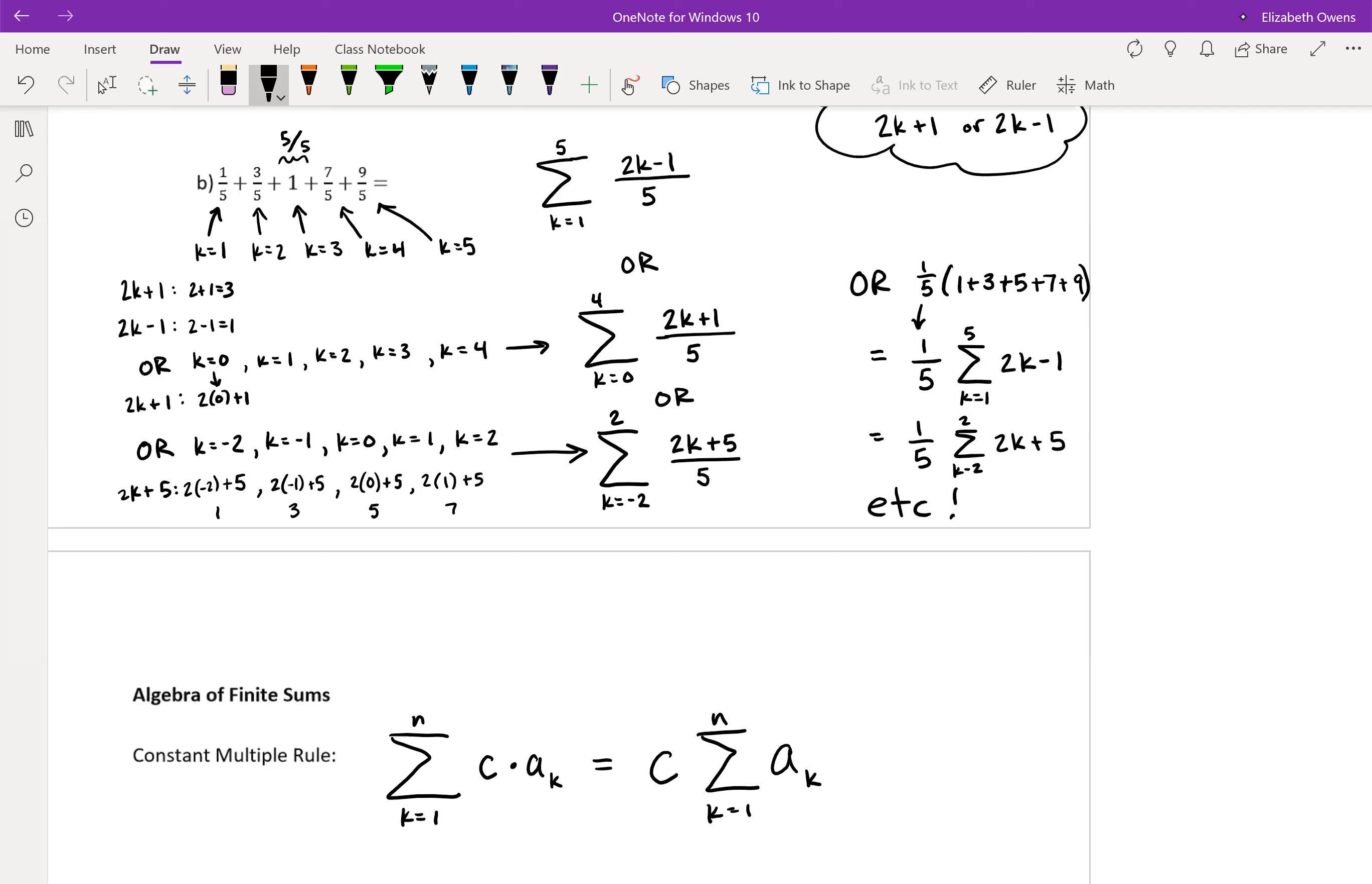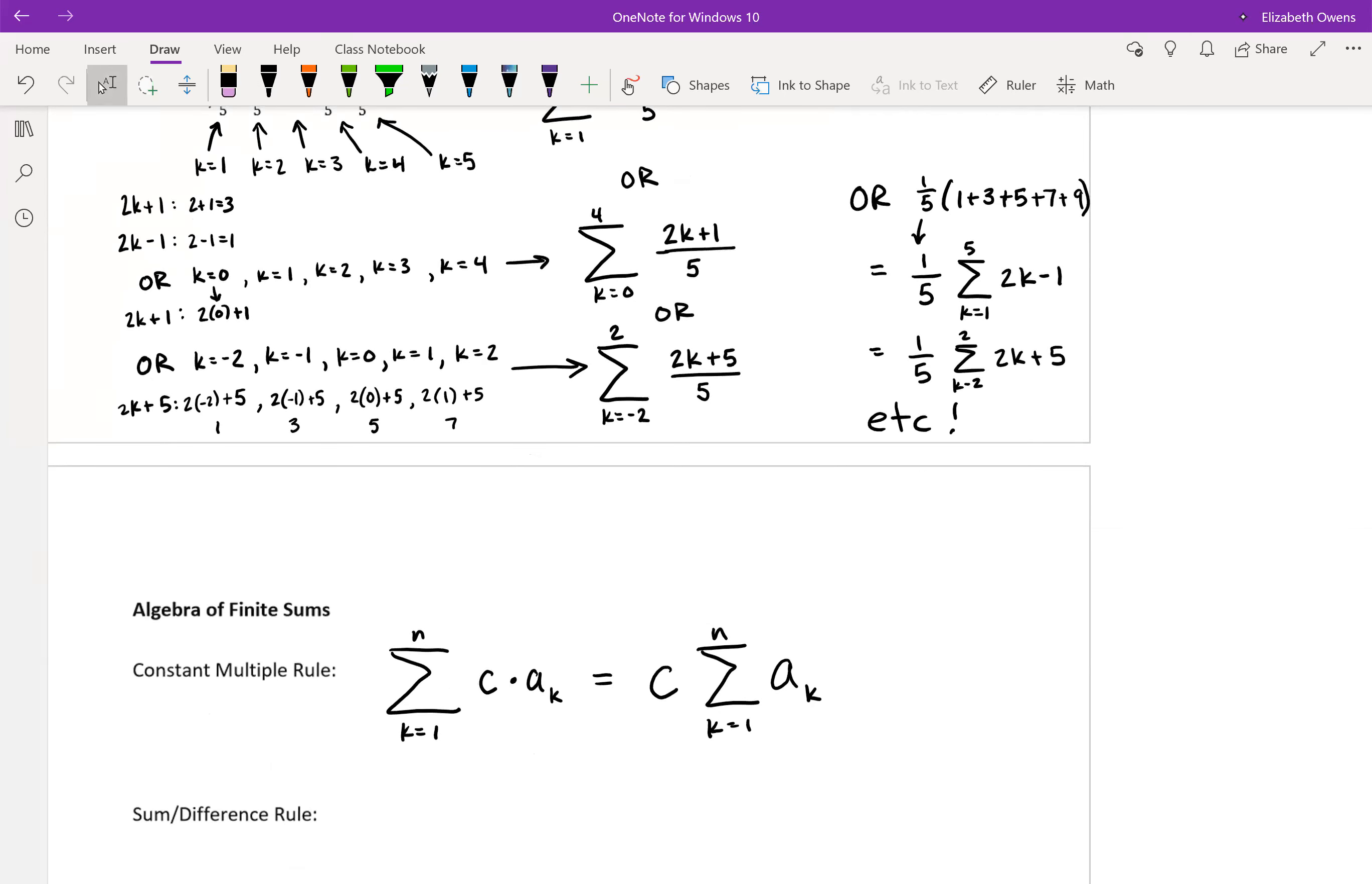And so that's why we're able to pull that one-fifth out and do one-fifth times a summation giving us those odd numbers. So you can do that for any constant and any type of formula. It doesn't have to be just restricted to odd numbers.